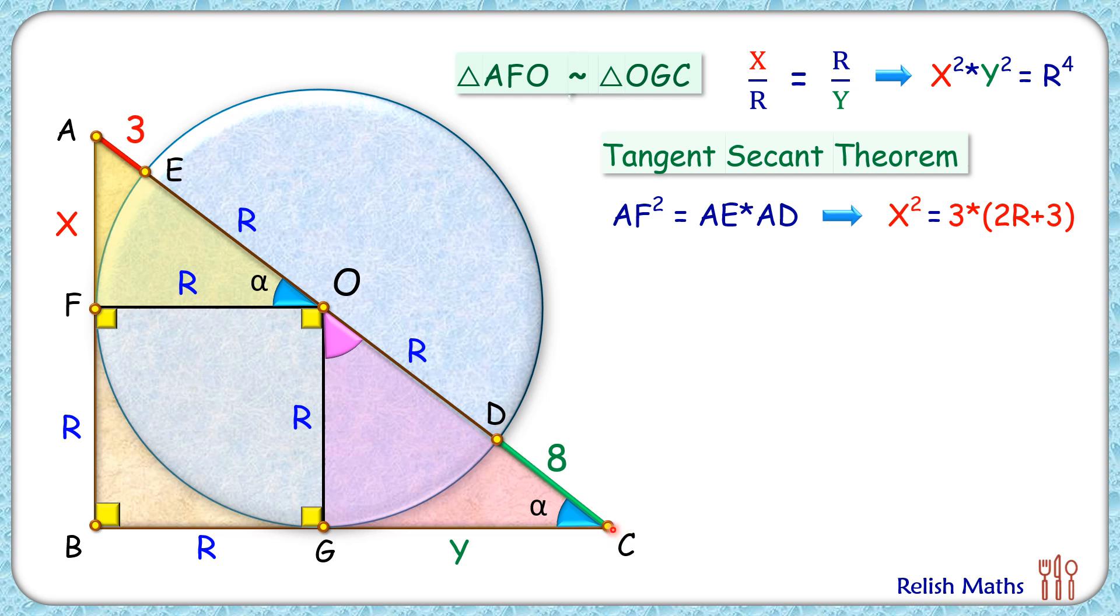Same way, applying tangent-secant theorem from point C, we get CG squared is CD times CE. Putting the values, CG is y, CD is 8, and CE is 8 plus 2R.